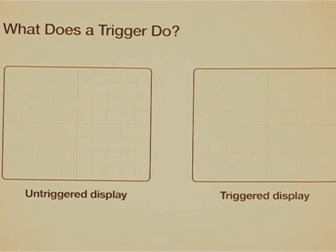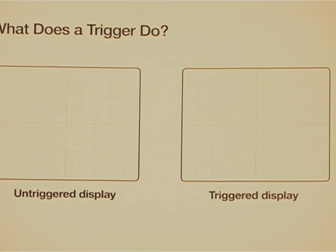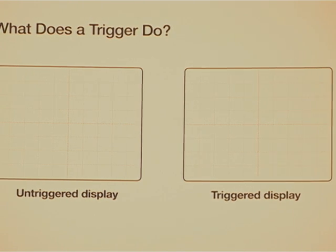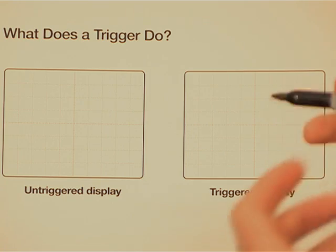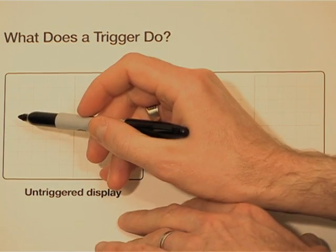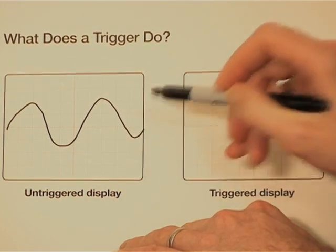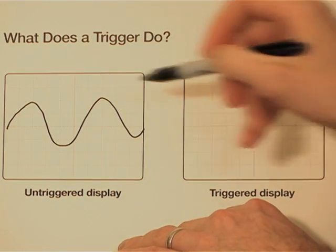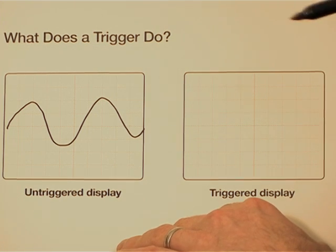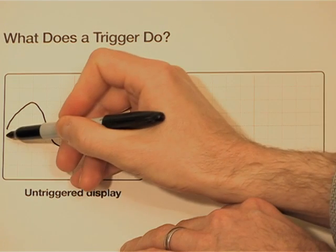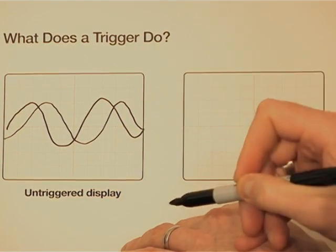The reason it's important to set that correctly is without triggering, your scope just updates its data at arbitrary times and your signal is repeating at arbitrary times and those probably won't line up. So, for example, imagine that your signal looks like this and that's what it looked like the first time the scope happened to update and then the next time it was time for the scope to update, it happened to catch the signal a little earlier. So it looked like that.